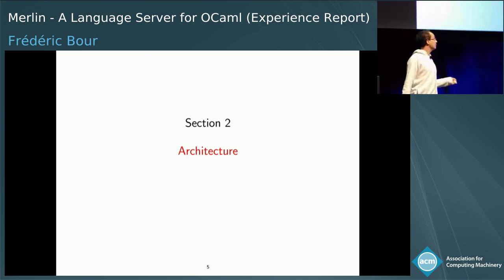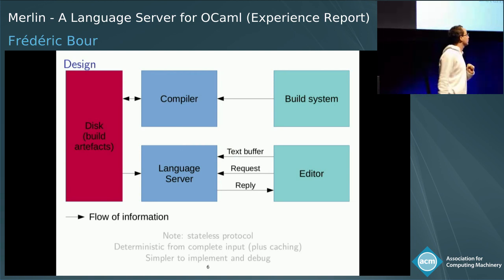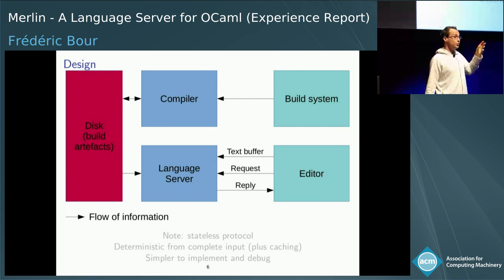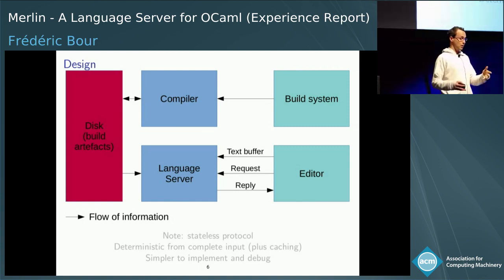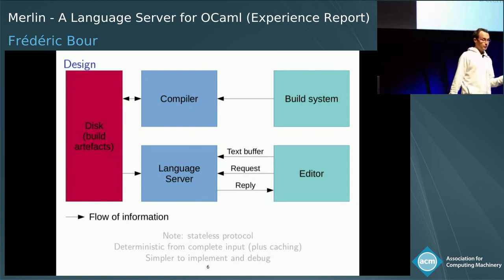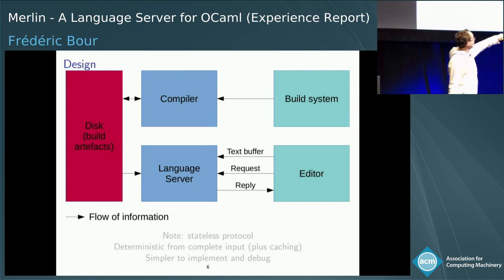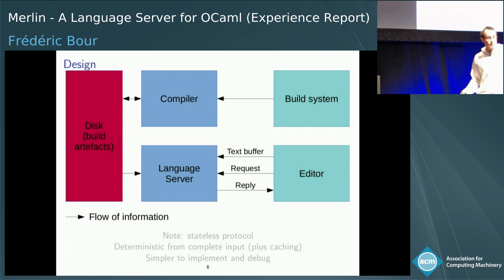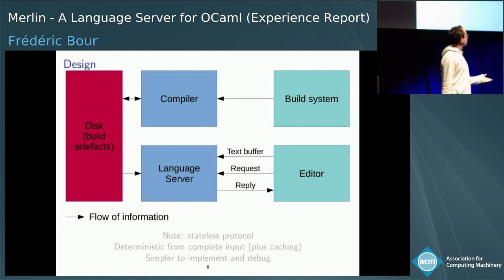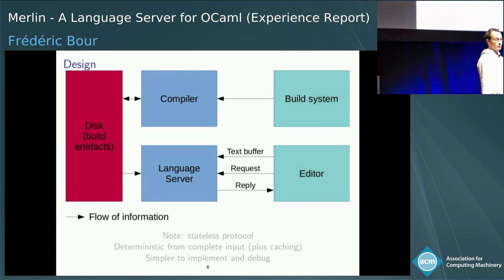Let's take a look at the system level. Generally, you start from a build system. The user invokes a build system, which finds work to do and invokes the compiler for each task. Each compiler invocation produces artifacts on disk and consumes other previously produced artifacts. In parallel, the user is working in an editor with one file open. We would like information specific to that file, so the editor sends the text buffer to the language server along with requests such as: are there any errors in this buffer, or what is the type at this position?